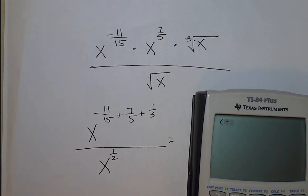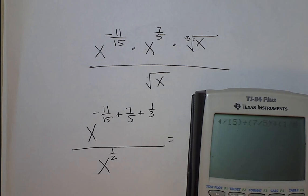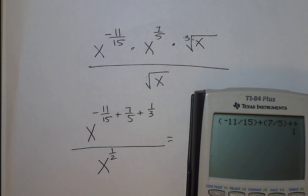Negative eleven fifteenths plus seven fifths plus one third. I don't even need to turn it back into a fraction.